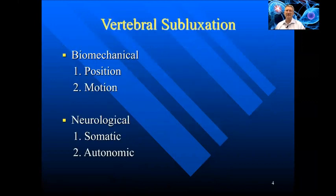Vertebral subluxations occur when changes in the position or motion of the spinal segment adversely affect neurological function. The adverse neurological effects may occur in both somatic and autonomic structures.